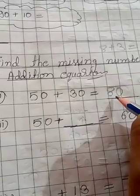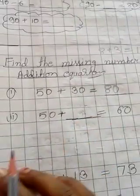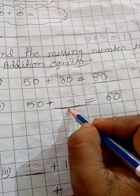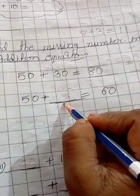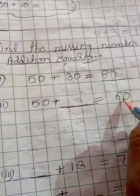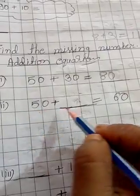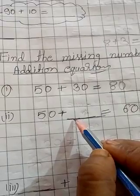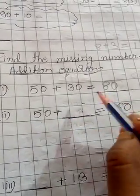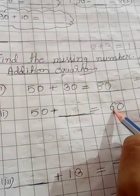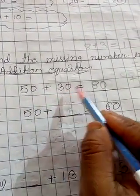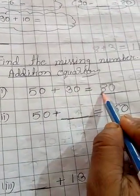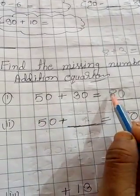In the second type of question, the sum and first addend are given and you have to find out the second addend. The sum is always greater than each addend. For example, 80 is more than 50 and 80 is more than 30.